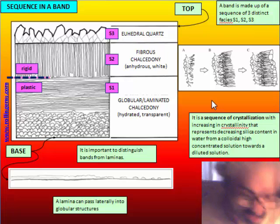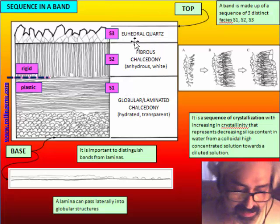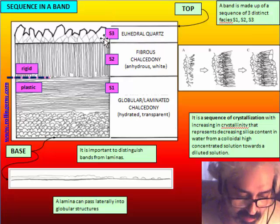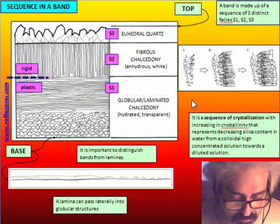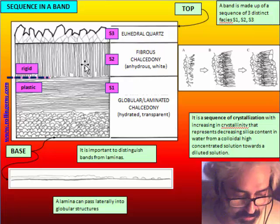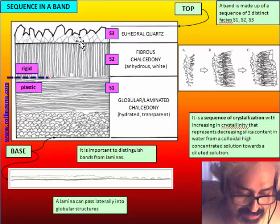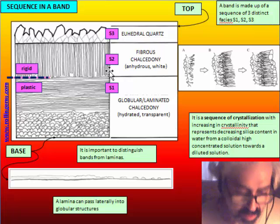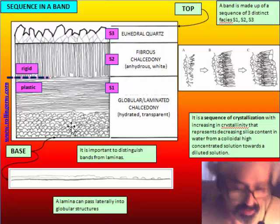If we analyze the banding in detail, there are not just one but three kinds of bands that occur in sequence, one above the other. Banding consists of three sub-facies: globular chalcedony (S1), fibrous chalcedony (S2), and quartz (S3). Globular chalcedony is transparent and hydrated — this is the portion that carries the color of the nodule. When you dye an agate, all the dye impregnates this portion because the color is water-soluble and enters where there is water.